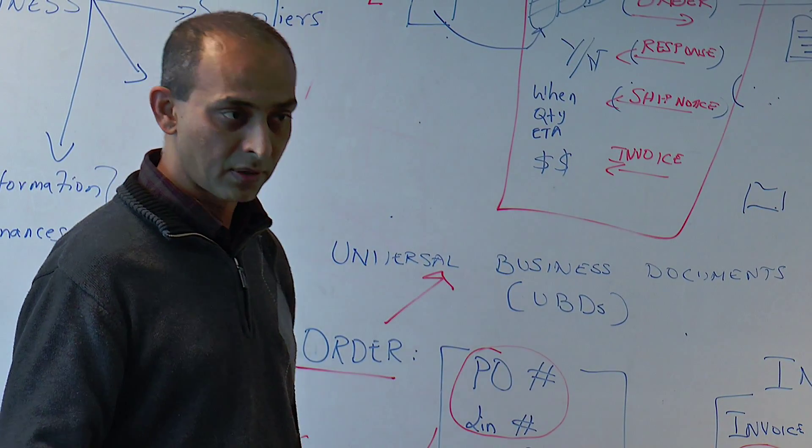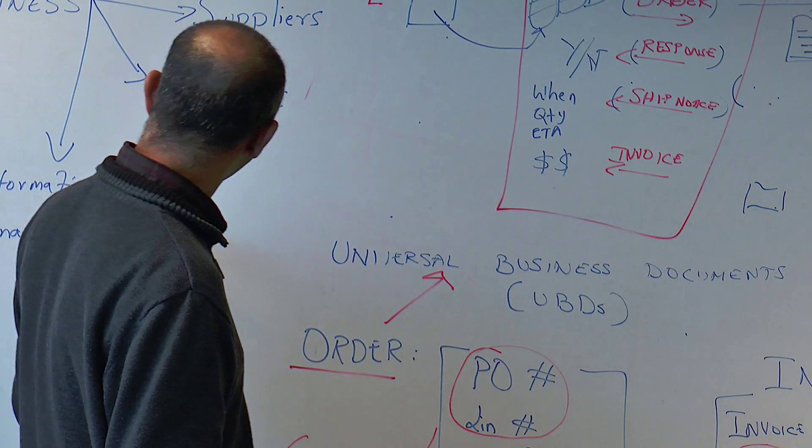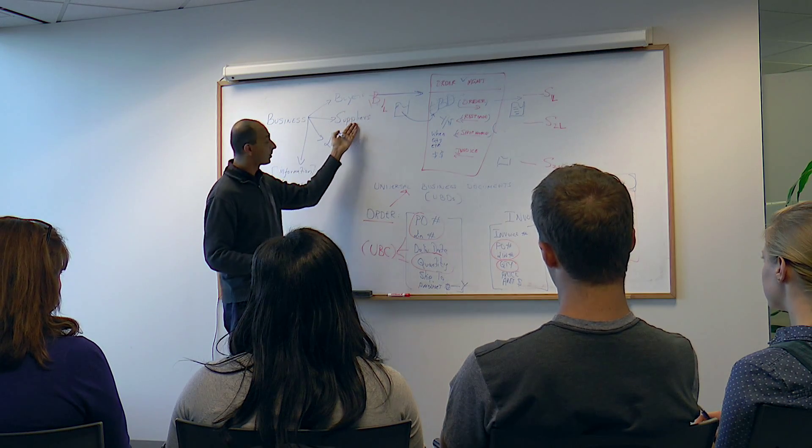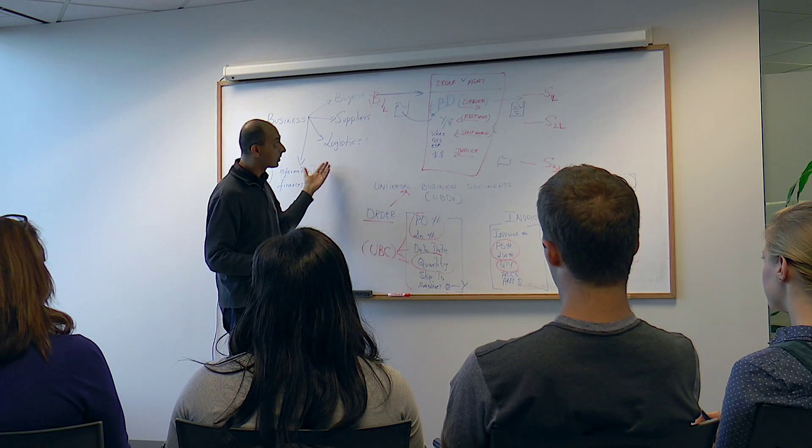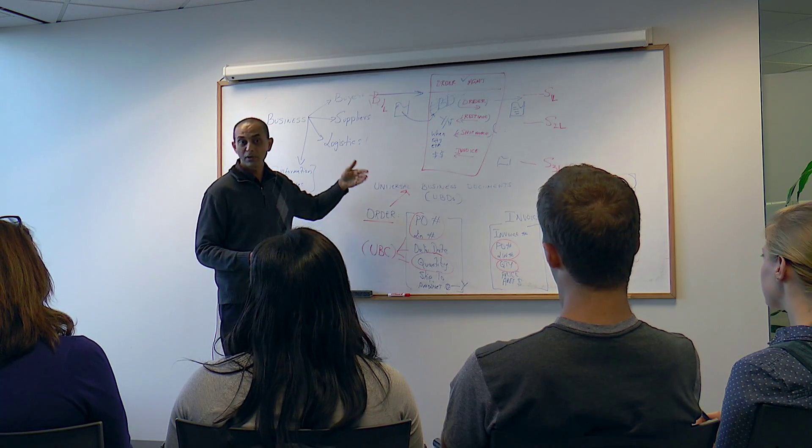The standard processes between buyers and suppliers are pretty universal throughout the world. A buyer is always going to buy goods from a supplier, a supplier is always going to ship goods and invoice once they ship.